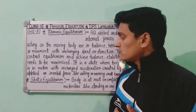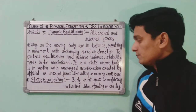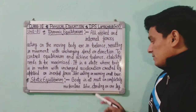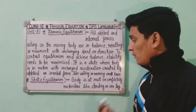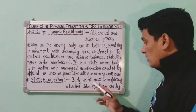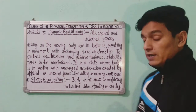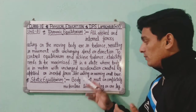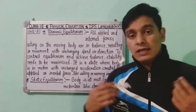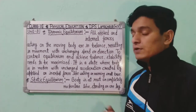Now let's know about Static Equilibrium. When a body is at rest or completely motionless — like standing on one leg — that is called Static Equilibrium. There is no motion in the body in Static Equilibrium.